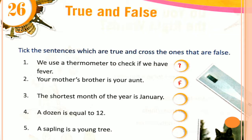Number 3: The shortest month of the year is January. Is it true or false? January has 30 or 31 days, but February has 28 or 29 days. That is why February is the shortest month of the year, not January. So it is FALSE.